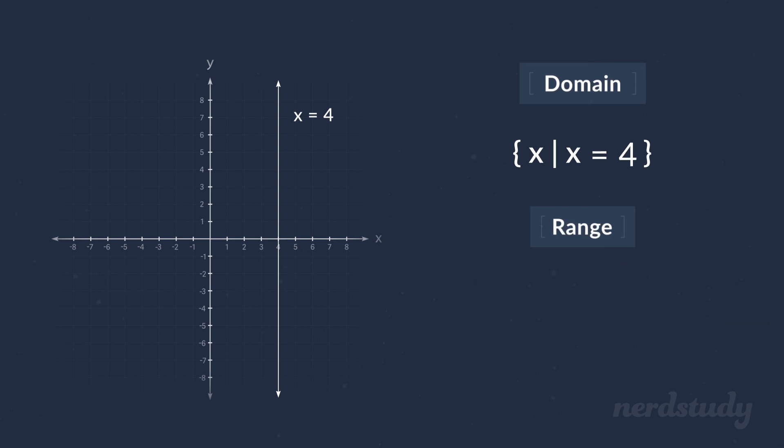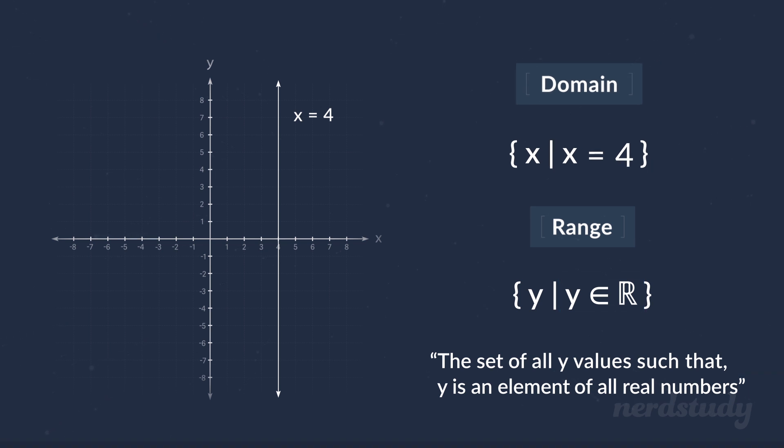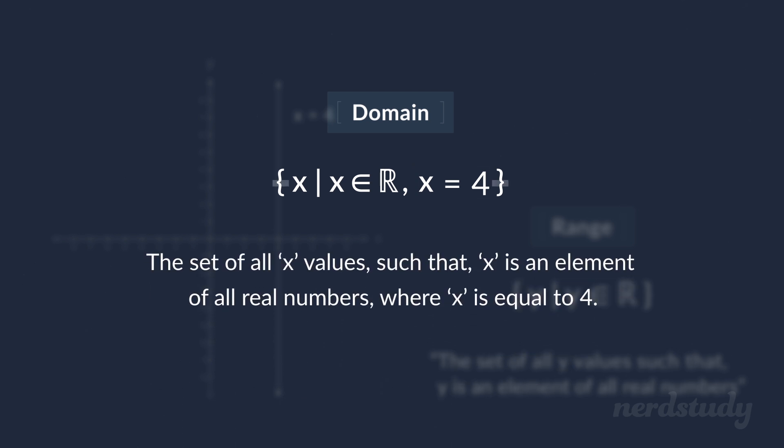And what would the range be? Well, notice how the range of this graph, or shall I say the y values, regardlessly continue to get larger or smaller. So, the range can be any number. Therefore, for the range, we can just write that it is in fact the set of all y values such that y is an element of all real numbers. On a side note though, if we wanted to be more specific with the domain here, we could actually add in the part where we mentioned that it is a set of all real numbers, since we would just be specifying the classification of it. But, by further writing that x is only equal to 4, we are including a restriction within the classification. Therefore, this would read, the set of all x values such that x is an element of all real numbers, where x is equal to 4.